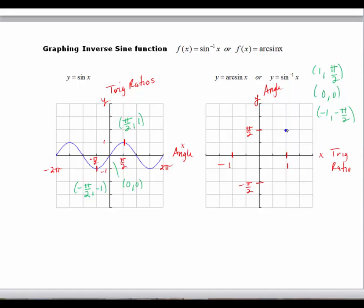So I'm going to go over 1 and up pi over 2, 0, 0, and then negative 1 down pi over 2. Now just looking at these, that almost looks like it should be a straight line.